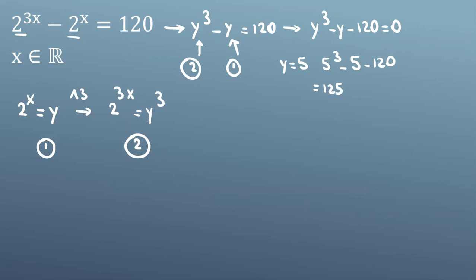125 minus 5 minus 120 equals 0. So because it equals 0...